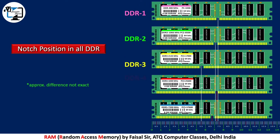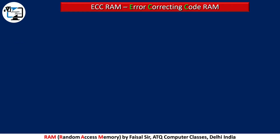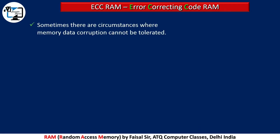Now let's look at an approximate difference in the notches of DDR. The notch position in every DDR variant is different, so we cannot use one DDR variant as a substitute for another DDR variant.